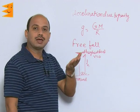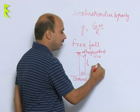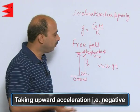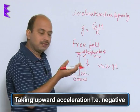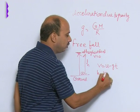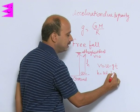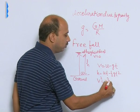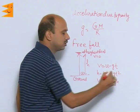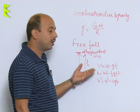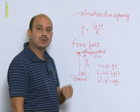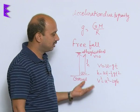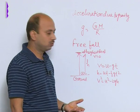When the object is going vertically upward, we write all equations like this: v = u − gt, meaning acceleration is taken as negative (upward direction). h = ut − ½gt², and the third one is v² = u² − 2gh. When the object goes up, acceleration acts downward, which is retarding the body, so we write acceleration as negative. Acceleration a is replaced by g, that is, acceleration due to gravity.